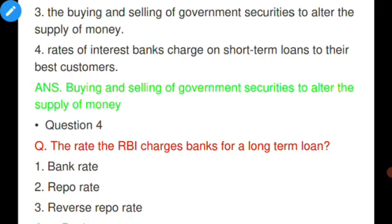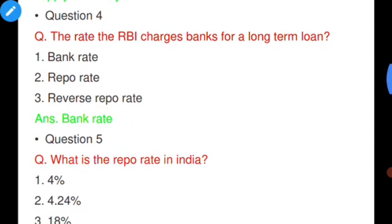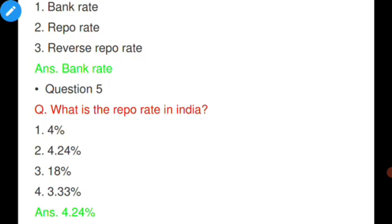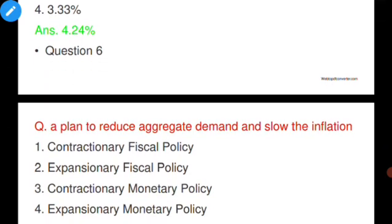Question number four: The rate the RBI charges banks for a long-term loan is — bank rate, repo rate, or reverse repo rate? The answer is bank rate. Question number five: What is the repo rate in India in percent? Options are 4%, 4.2%, 4.24%, 18%, and 3.33%. The answer is 4.24% — that is the repo rate in India.